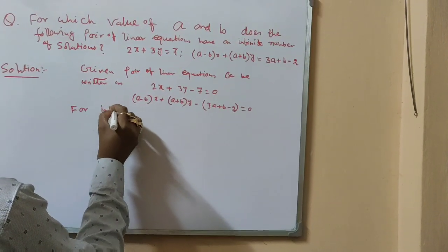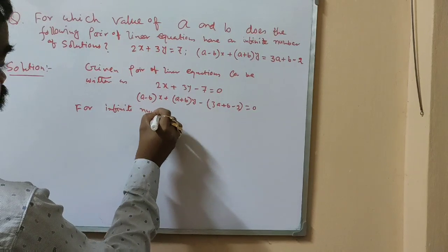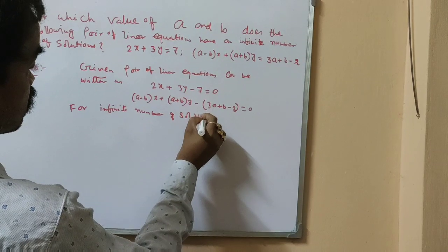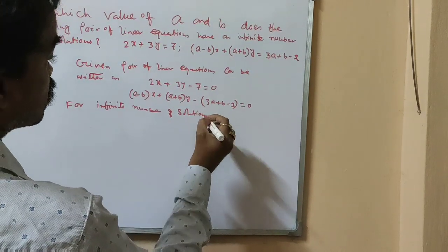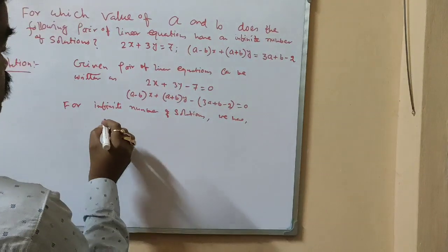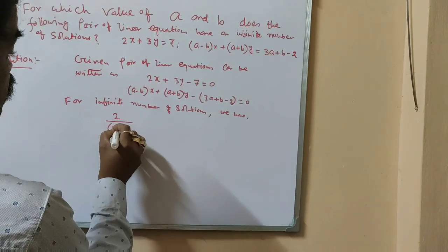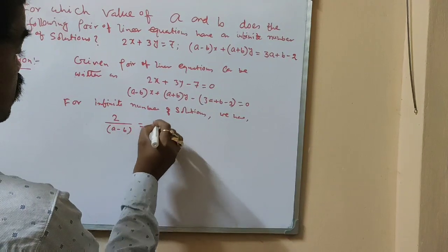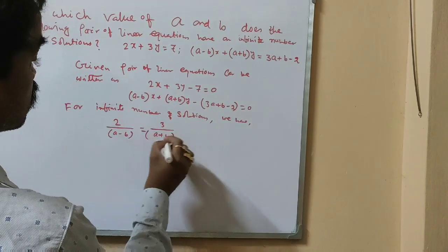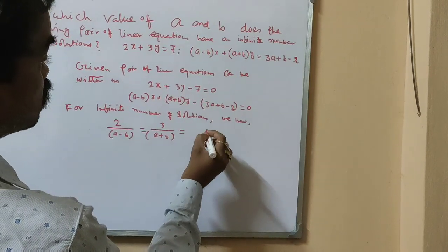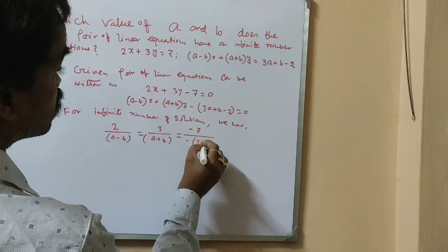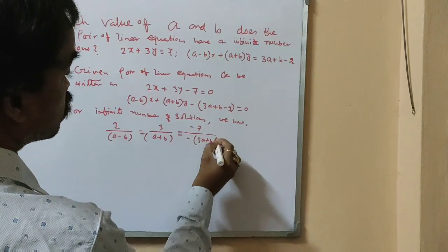For an infinite number of solutions, we have the condition: 2 by a minus b is equal to 3 by a plus b is equal to minus 7 by minus 3a plus b minus 2.